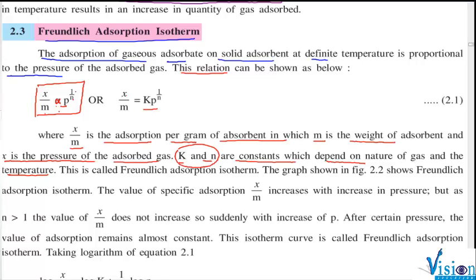Temperature change means k and n value changes. In MCQ they can ask you this. They won't ask you the full Freundlich isotherm in 1 mark. They can ask: k and n depend upon which parameters? They depend upon temperature and nature of gas. Now, this relationship is called Freundlich adsorption isotherm.